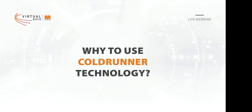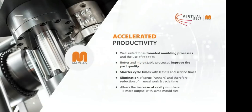Why use cold runner technology? I would like to point out four big reasons why we think it's good to use a cold runner in elastomer production. The first big topic is the productivity side. Cold runner blocks in elastomer production are well suited for automation processes — easier to automate than a hot runner mold, because we have no runners or smaller runners on the part. We have a better and more stable process, improved part quality, and shorter cycle times with less filling and service time.